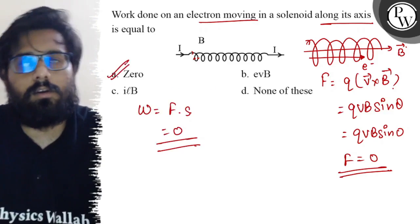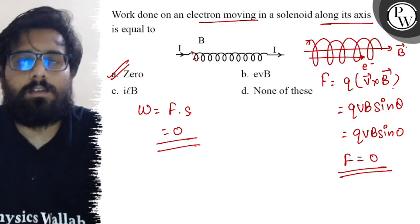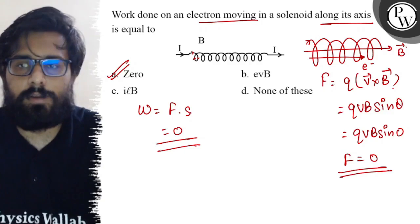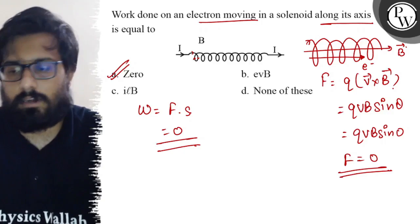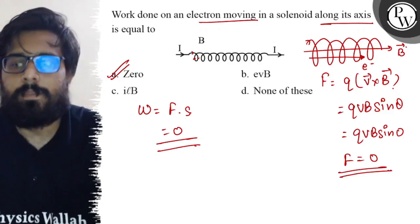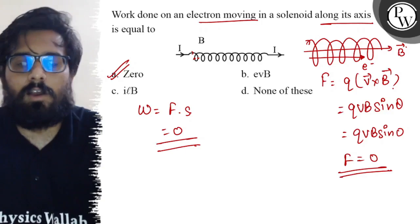So your work done on an electron to move it along the axis of a solenoid will be zero, zero, okay. So I hope you got the concept of this question. All the very best!